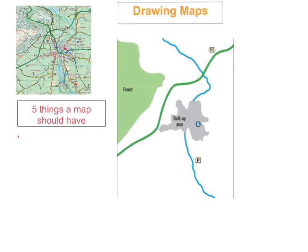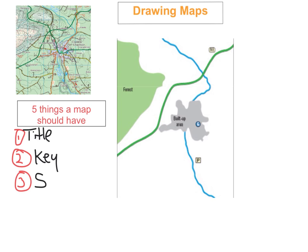A map should always have five things: first, a title; second, a key; third, the scale; fourth, a north arrow; and fifth, a frame around it.